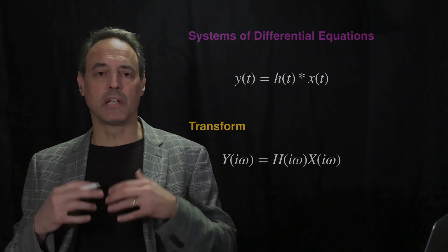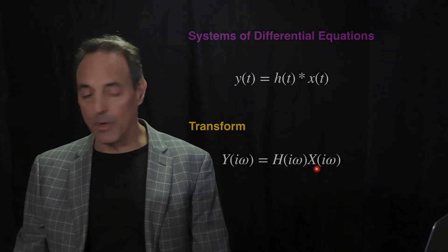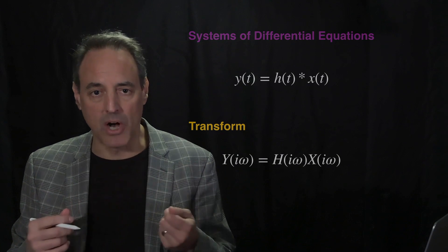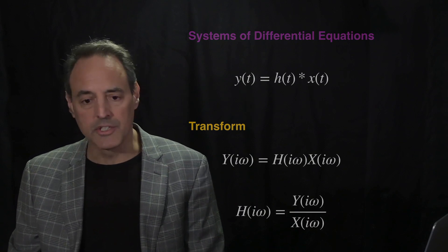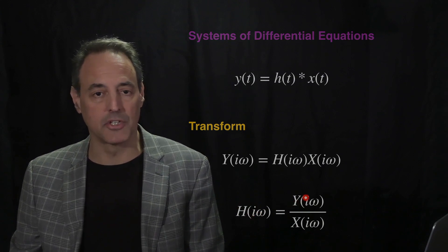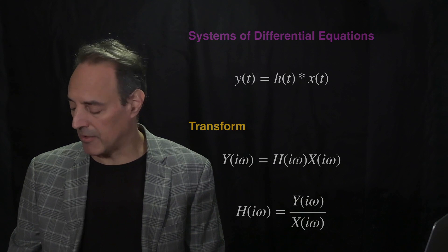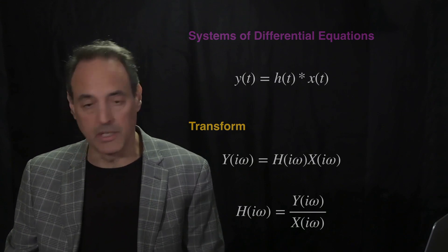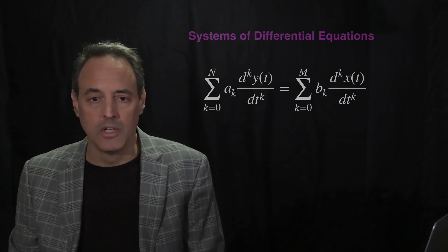One thing we're going to look at is: you don't necessarily know the impulse response. By understanding the Fourier transform of the input and the Fourier transform of the output, we can actually reconstruct the impulse response in this LTI system. We can compute the unknown H in the Fourier domain as a quotient — Y in the Fourier domain divided by X in the Fourier domain. Then we inverse Fourier transform to get H in the time domain.